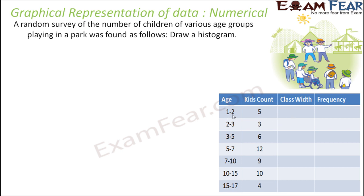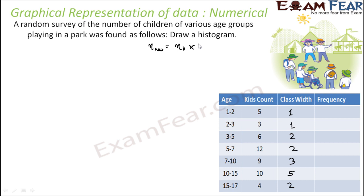The class width is not the same here. Width of 1 to 2 is 1, 2 to 3 is 1, 3 to 5 is 2, 5 to 7 is 2, 7 to 10 is 3, 10 to 15 is 5, 15 to 17 is 2 — all different. So we have to find the adjusted frequency. The formula is: new frequency = old frequency × (minimum class size / current class size).